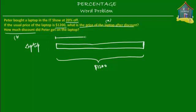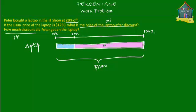So if we draw a percentage scale above this model diagram, then starting at 0%, the last point must be 100%. So $1,200 is equal to 100%. Peter got a discount of 20% off. So at the 20% mark, the blue part over here is how much discount Peter got. And this pink part over here is the price of the laptop after discount.